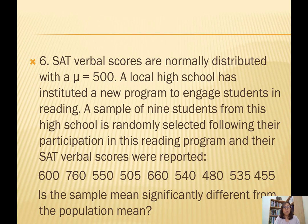Question 6 says SAT verbal scores are normally distributed with mu of 500. A local high school has instituted a new program to engage students in reading. A sample of 9 students is randomly selected following their participation in the reading program and their SAT verbal scores are reported as raw data. The question is whether the sample mean is significantly different from the population mean. Unlike the other questions, you have raw data here. What is given is mu of 500. There is no alpha given, so we would start with alpha of 0.05 as a good starting point.